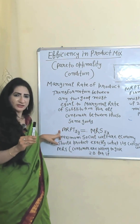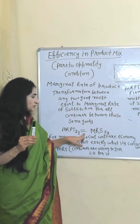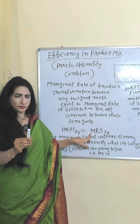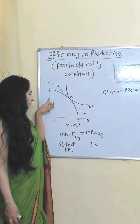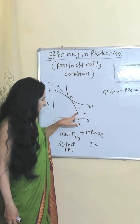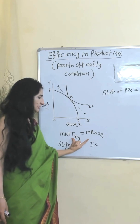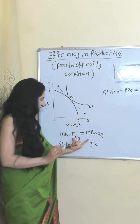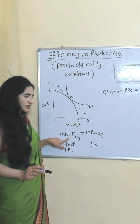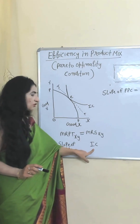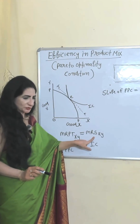So we can say that the marginal rate of product transformation of X for Y should equal the marginal rate of substitution of X for Y. On a diagram with good X and good Y, the production possibility curve and the indifference curve are used. According to this condition, these two must be equal to each other. The slope of the production possibility curve shows the marginal rate of product transformation, and the slope of the indifference curve shows the marginal rate of substitution.